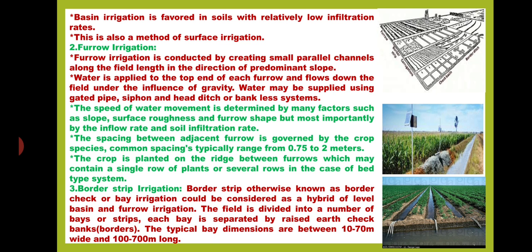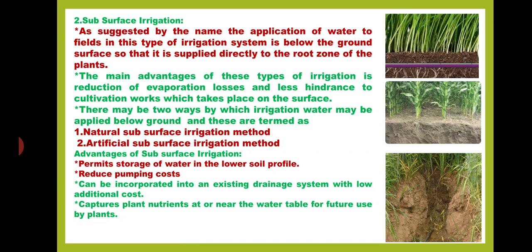The field is divided into a number of bays or strips, each separated by raised earth check banks. The typical bay dimensions are between 10 to 70 m wide and 100 to 700 m long. Then we discuss about subsurface irrigation. As suggested by the name, the application of water to fields in this type of irrigation system is below the ground surface, so that it is supplied directly to the root zone of the plants. The main advantages of this type of irrigation are reduction of evaporation losses and less hindrance to cultivation works which take place on the surface.